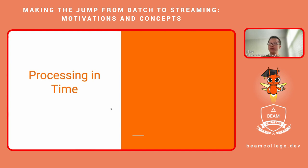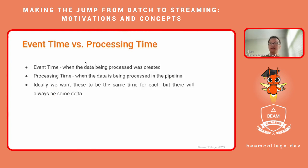So how to process streaming data in time? This comes down to a fundamental concept in Beam: clearly treating event time and processing time differently. The data is labeled by event timestamp — a timestamp value. The event time is when the data was created, associated as metadata with each element when it is created. The processing time is the machine time when the data is currently at this stage in the pipeline. Ideally we want these times to be the same, or at least as close as possible, meaning minimum latency in the system. But in reality there is always some delta — the processing time is always later than the event time.